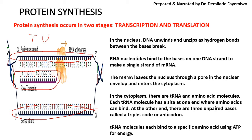Once that copy has been made, we call it the mRNA, which is the messenger RNA. It is carrying the message that the DNA codes for and it is going to leave the nucleus. The messenger RNA leaves the nucleus through the nuclear envelope and enters the cytoplasm. Once it gets into the cytoplasm, it will find tRNA molecules — transfer RNA — and also amino acid molecules. The transfer RNA transfers the amino acids that correspond to the mRNA.